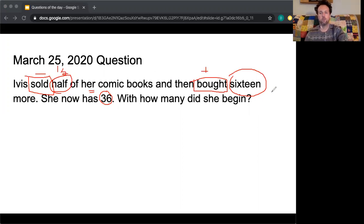So I'm going to use C as our variable because C for comic books. So if she sells half of her comic books, we have one half C plus 16 equals 36. So one half of all the comic books that she started out with, if you add 16 to that number, you're going to get 36. So I'm going to start here by subtracting 16 from both sides.